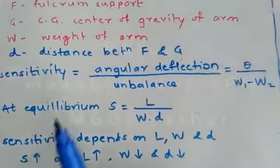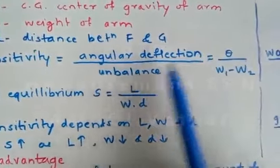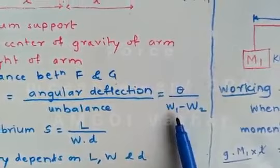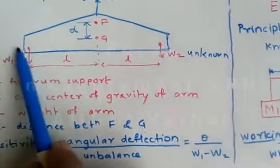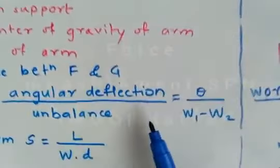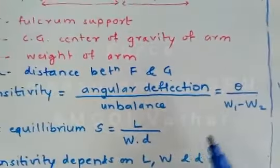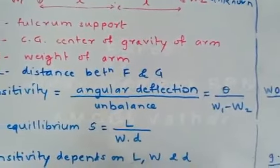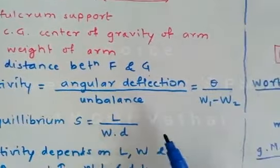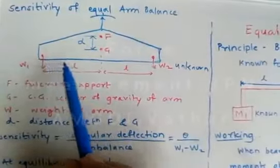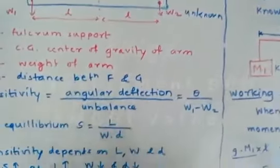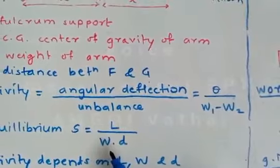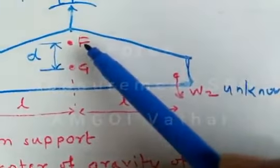Now, the sensitivity can be defined as the angular deflection per unit of unbalance. Here, unbalance is the difference between the two weights or forces, that is W1 and W2. Therefore, we can write sensitivity as θ/(W1 - W2). Now, at equilibrium, when we apply the moment equations and solve, we get: sensitivity equals length L of the arm divided by the product W × d, where W is the weight of the arm and d is the distance between the fulcrum and the center of gravity.